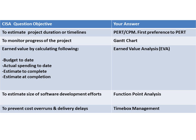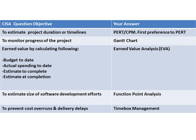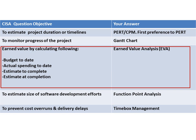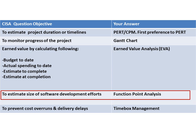To summarize the CISA question objectives: when the objective is to estimate project duration or timelines, the answer is PERT or CPM with first preference given to PERT. When the objective is to monitor progress of the project, the answer is Gantt chart. If specific details are given for budget to date, actual spending to date, estimate to complete, or estimated completion, the answer should be Earned Value Analysis. To estimate the size of the software development effort, the answer is Function Point Analysis.